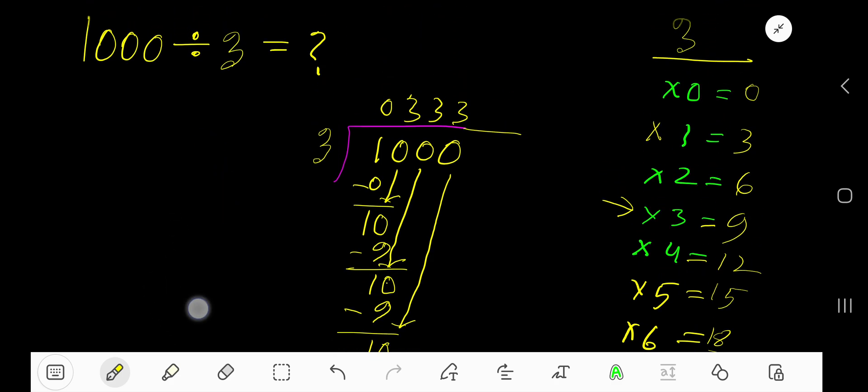This 1 is a remainder, so this 0 doesn't have any value. So 333 remainder 1 is your answer. But if you want to write your answer in decimal form, what will you do? Just convert this number into a decimal number.